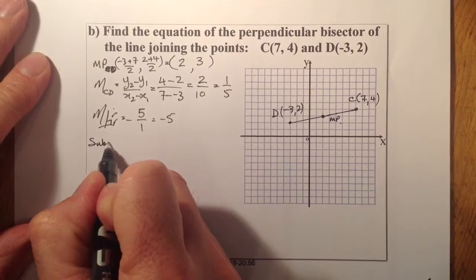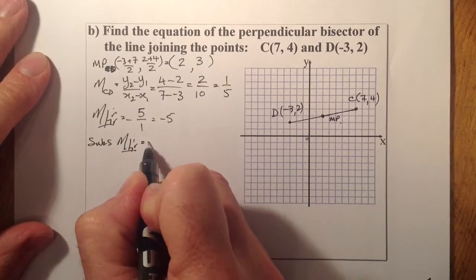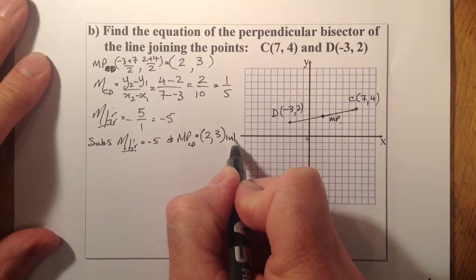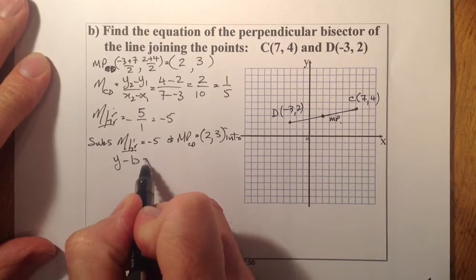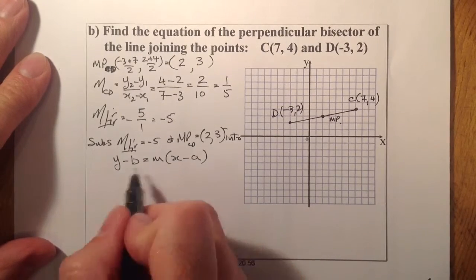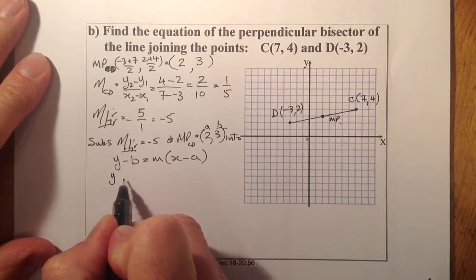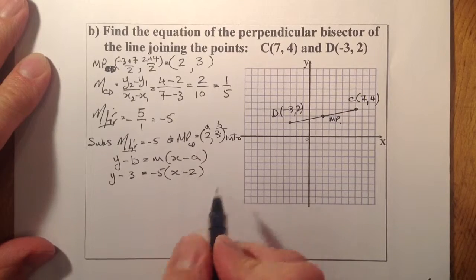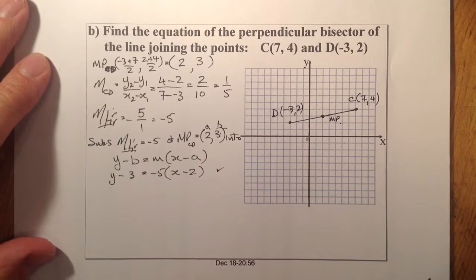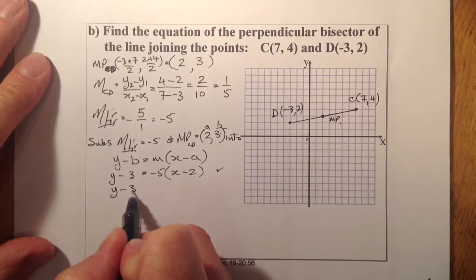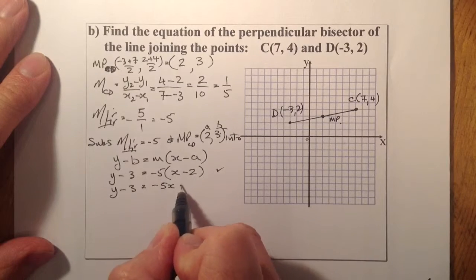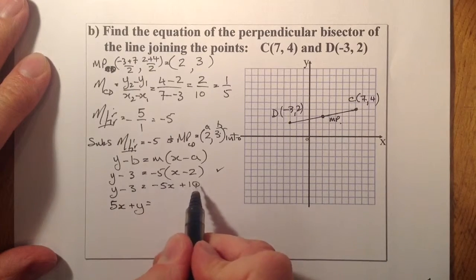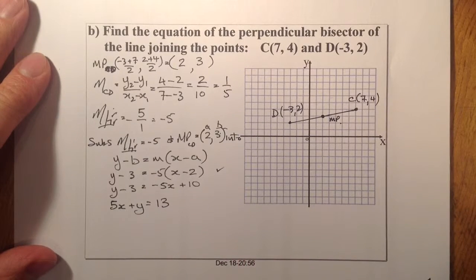I'll substitute the perpendicular gradient of minus 5 and the midpoint of CD at (2, 3) into y minus b equals m times x minus a. So: y minus 3 equals minus 5 times (x minus 2). Multiplying out the right-hand side: minus 5x plus 10. Bringing x to this side: 5x plus y. Taking 3 over gives plus 13. So the equation is 5x plus y equals 13.